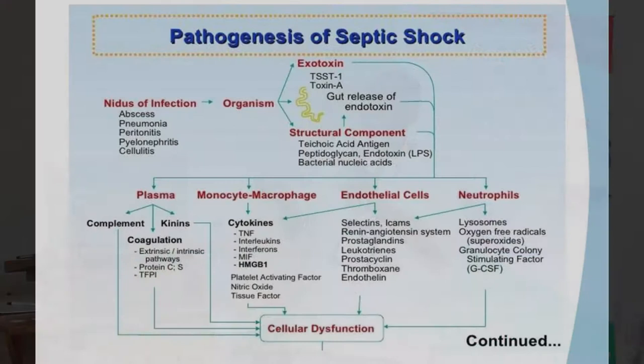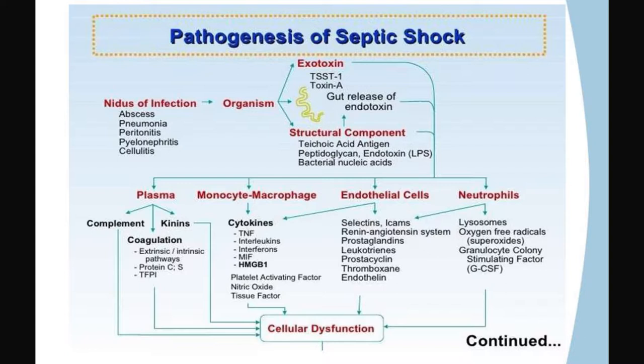The nature of infection — whether an abscess, pneumonia, or cellulitis — the organism produces exotoxins or cellular components. What matters is that cytokines are produced by macrophages, monocytes, and endothelial cells, and these affect coagulation.